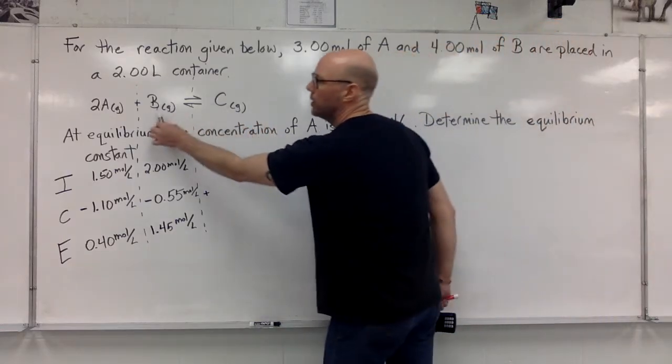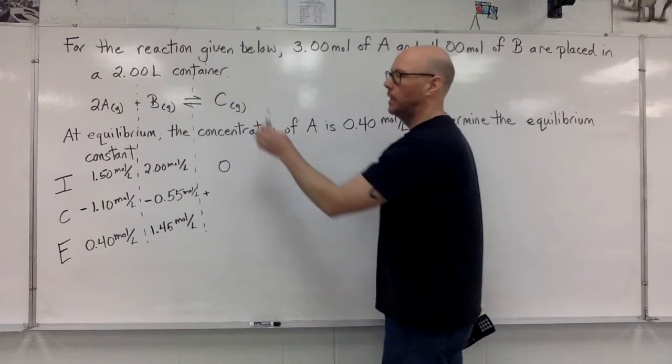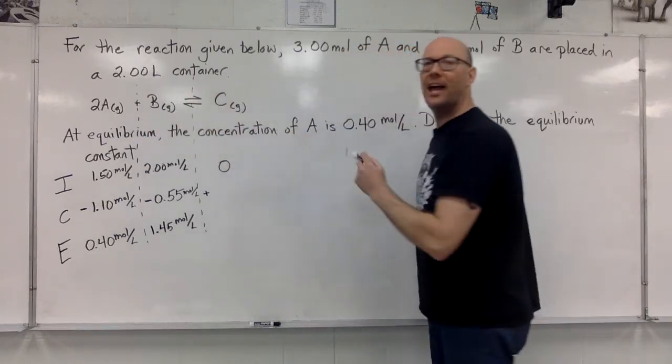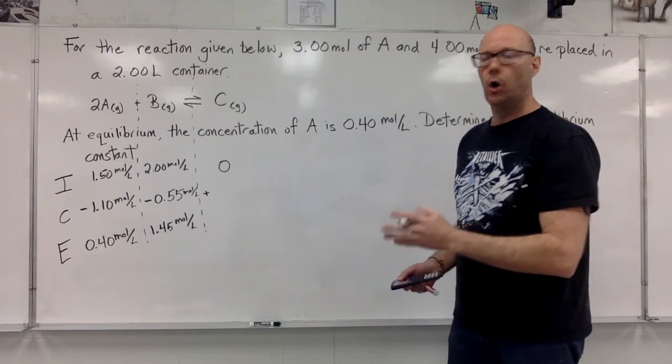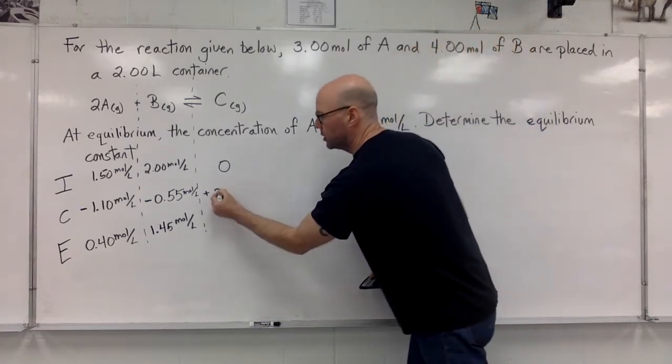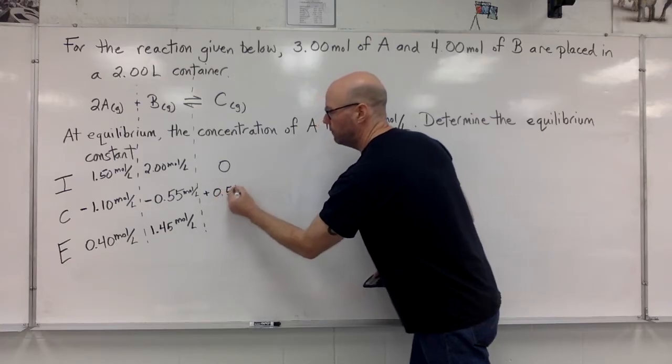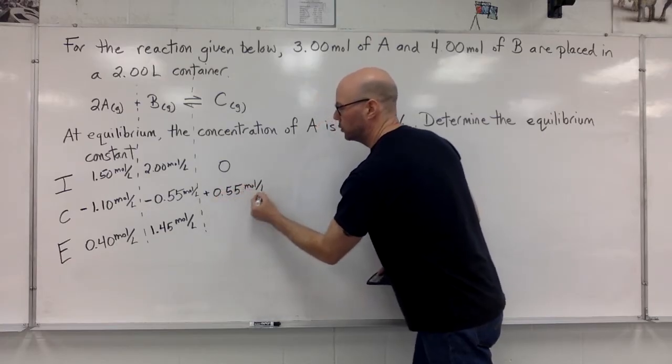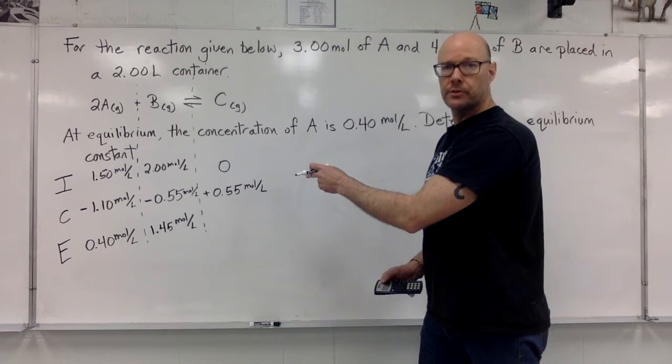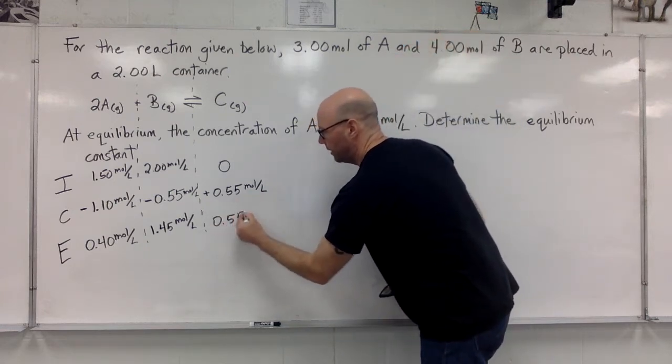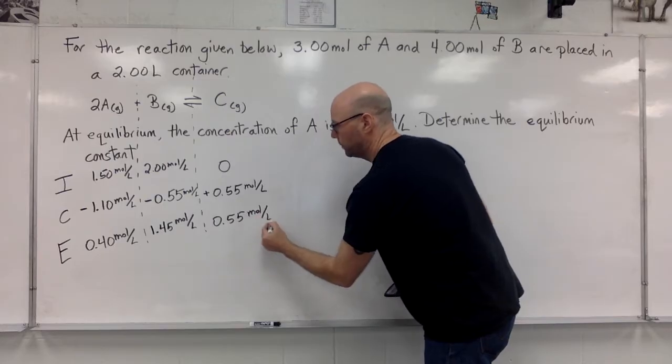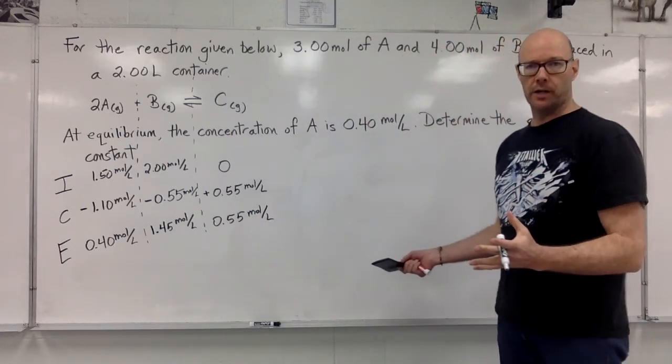C is in a 1 to 1 ratio with B, and a 1 to 2 ratio with A. So it had the same change as B, because it's in a 1 to 1 ratio. Only this time, it was a positive change. 0.55 moles per liter. 0 plus 0.55 is 0.55 moles per liter. We filled in the ICE box.